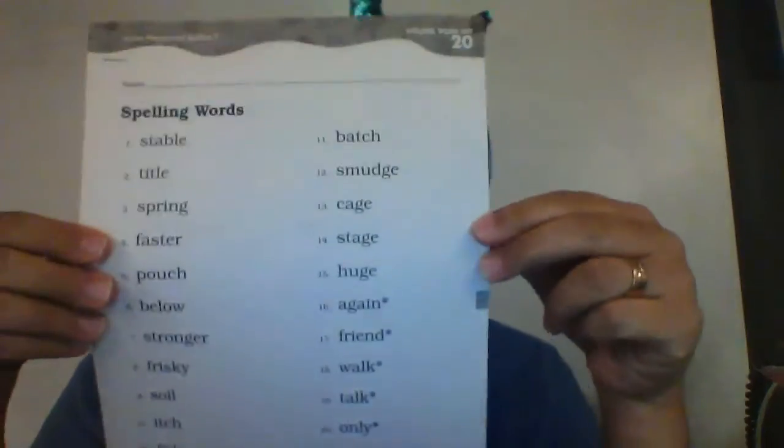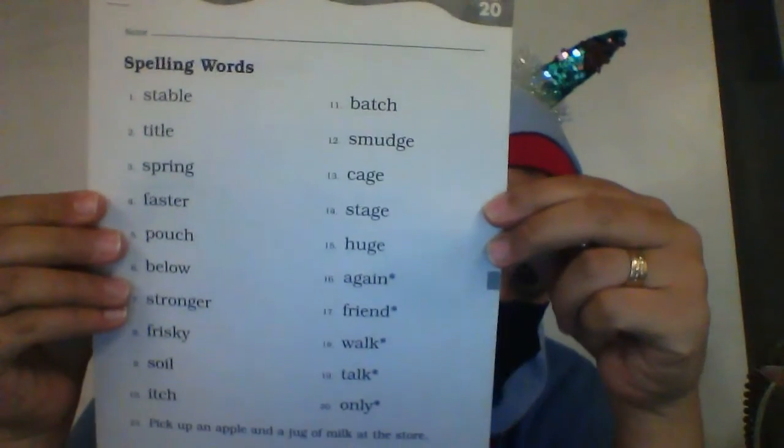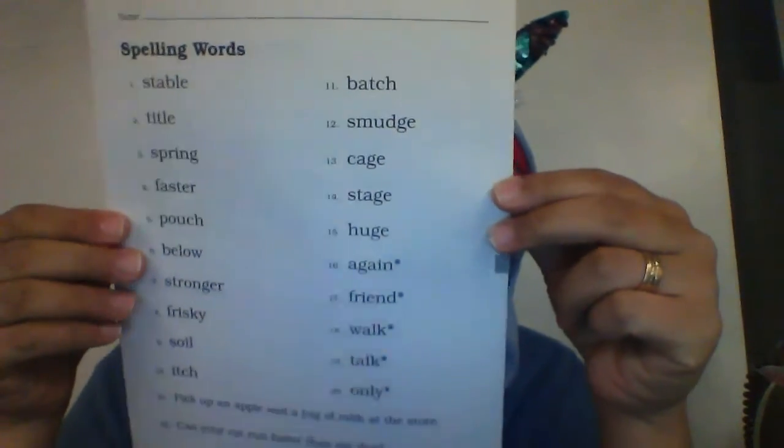Excellent job. Okay, let's go over our new spelling words for this week — Spelling Word List 20. Take out your Saxon work. Spelling List 20 is what we're focusing on this week.